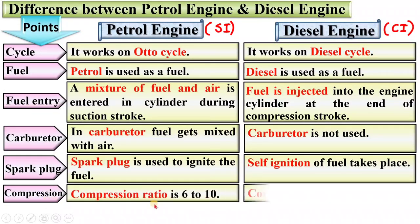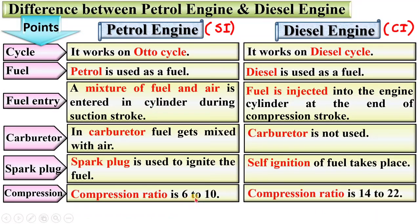Next, compression ratio is 6 to 10 in case of petrol engine, whereas in case of diesel engine it is 14 to 22.